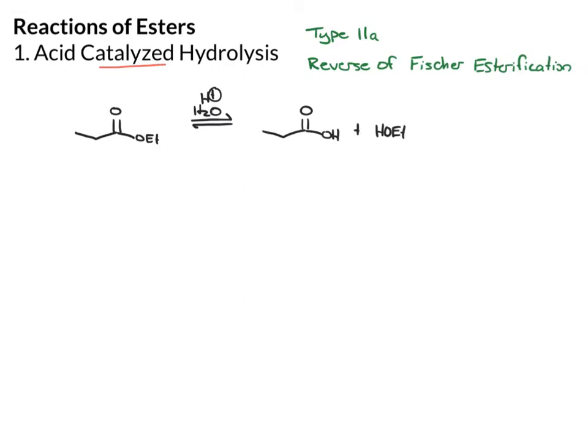In the Fisher, we used excess alcohol and reacted that with the carboxylic acid under acidic conditions to produce the ester. Now we're using an excess of water to drive this reaction. That's the easiest way to drive the hydrolysis reactions.